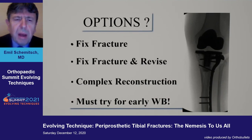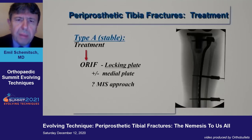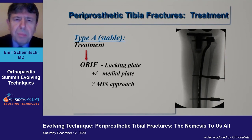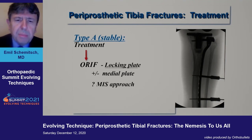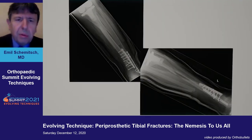In terms of options, it's fix the fracture, fix the fracture and revise, or complex reconstruction. Whatever you're going to do, you want to get the patient going and weight-bearing early. In the type A fracture where the implant is stable, conventional treatment would be with a locking plate. The question is whether you add a second medial plate, and we would typically do these through an MIS approach as opposed to a fully open approach.